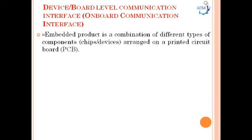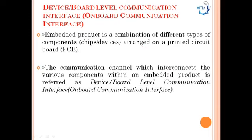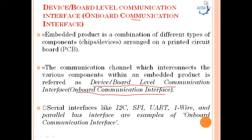For embedded products, a combination of different types of components like devices or chips are arranged on a printed circuit board. The communication channel interconnecting these various components within an embedded product is referred to as device or board-level communication, also called the onboard communication interface. Serial interfaces such as I2C, SPI, UART, one-wire, and parallel bus interface are examples of onboard communication interfaces.